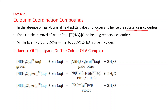For example, removal of water from [Ti(H₂O)₆]Cl₃ on heating renders it colorless, since the water molecules acting as ligands are removed. Similarly, anhydrous copper sulfate is white, but CuSO₄·5H₂O is blue in color. If you heat it, the water molecules are removed and it converts into anhydrous copper sulfate, which is white.